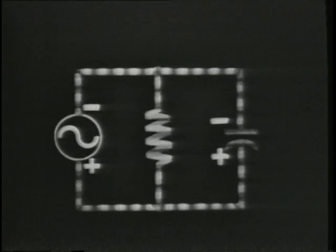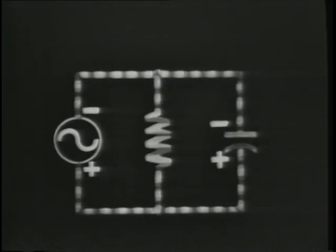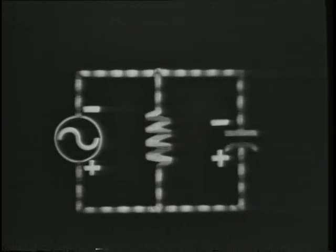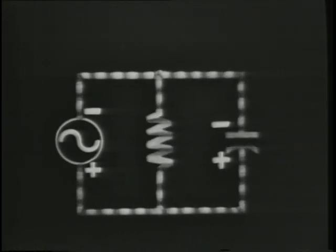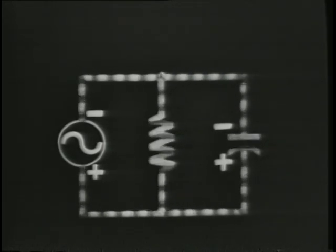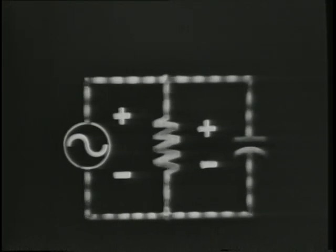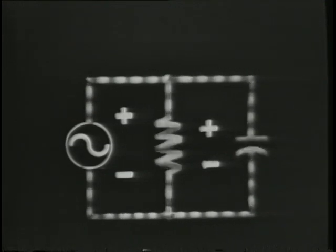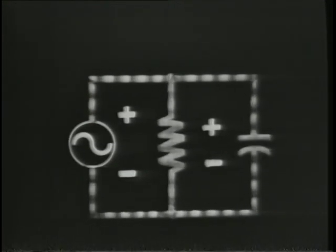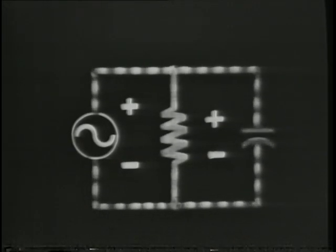This point may be understood by looking at our circuit in operation. When the first alternation occurs, current flows through the resistor and heat is generated — we dissipate power. Current also flows to the capacitor, but the energy is stored in the capacitor and not dissipated. On the next alternation, current flows through the resistor in the opposite direction and power again is dissipated. But the capacitor simply returns the energy stored, and again no power is dissipated in the capacitive branch. Therefore, only the resistor dissipates power, but both components draw current.